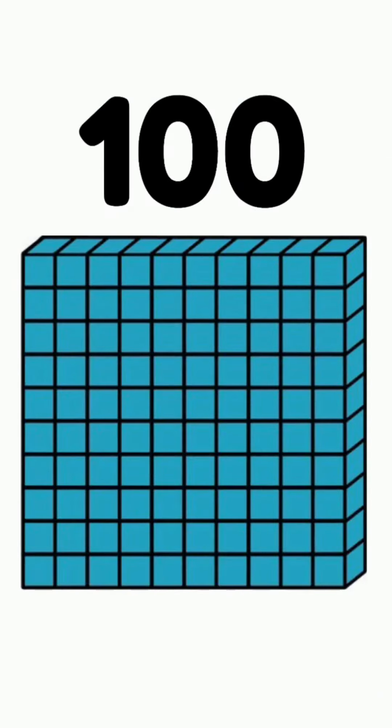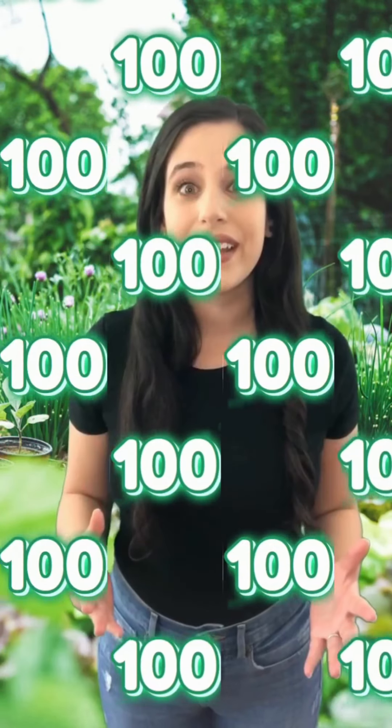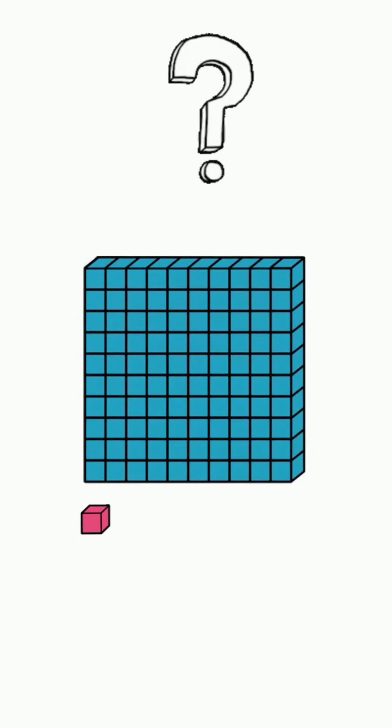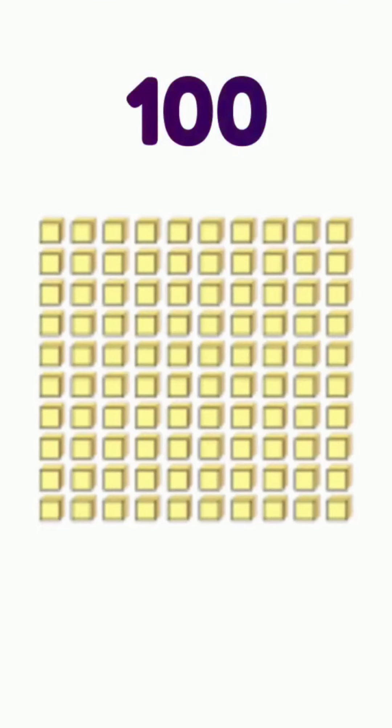We just skip counted by 10, ten times, and that got us to 100. So if there are 10 tens in 100, how many ones are there? Right! 100. 100 is equal to 100 ones. Count with me.